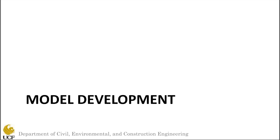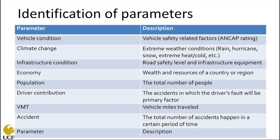Let us look at the model development. We start by looking at what the main parameters are that are typically involved in road safety and transportation, and identifying them. We did this through rigorous literature review, trying to identify the critical parameters for the current study. These parameters are then used in the causal loop diagram, and here you see the major parameters — not all of them, but the major ones.